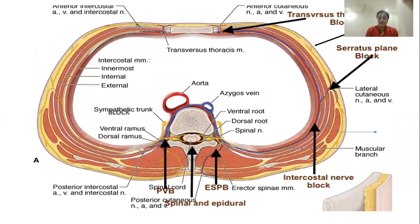What blocks do we have? That is the paravertebral block, erector spinae plane block, after the spinal and the epidural, then you have the intercostal nerve block, the anterior block, the pec blocks, and anteriorly you have the transversus thoracic plane block.